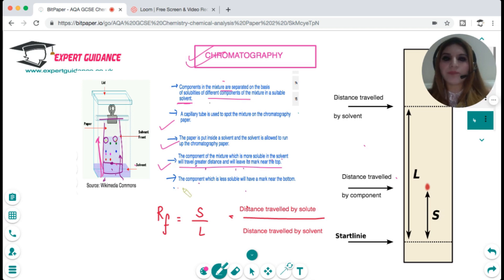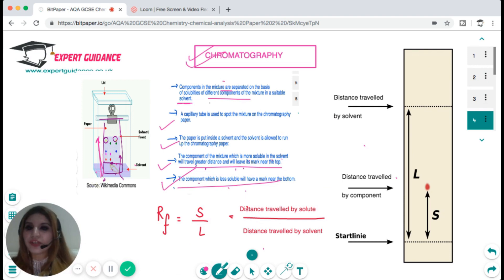The component of the mixture which is more soluble in the solvent will travel greater distance and leave a mark near the top. The component which is less soluble will leave a mark near the bottom. How do you calculate the different components? You calculate the retention factor. Retention factor is the distance traveled by your component divided by the total distance traveled by the solvent.